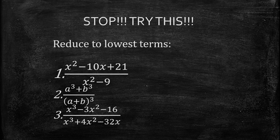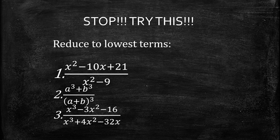Now try this — reduce to lowest terms. Number 1: x squared minus 10x plus 21 over x squared minus 9. Number 2: a cubed plus b cubed over the quantity (a plus b) cubed. Number 3: x cubed minus 3x squared minus 16 over x cubed plus 4x squared minus 32x. I hope everyone has grasped the idea of how to reduce fractions to lowest terms. Thank you so much for listening, and God bless.